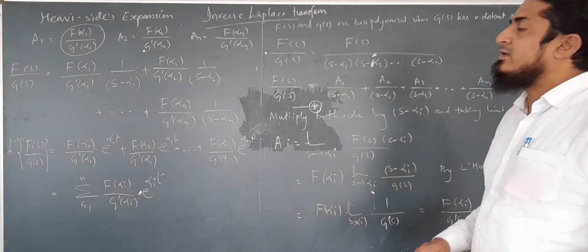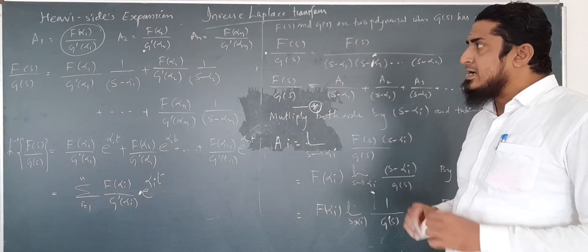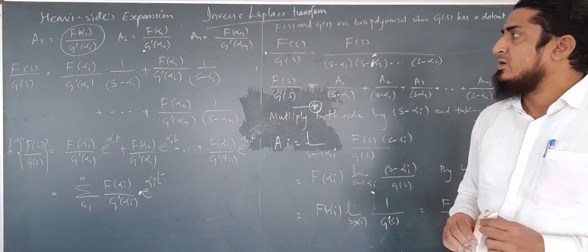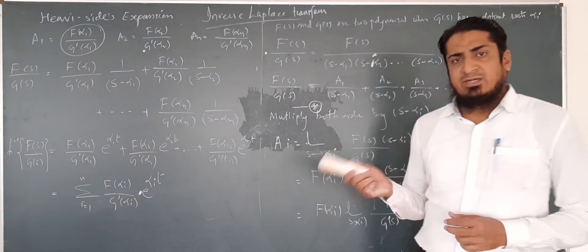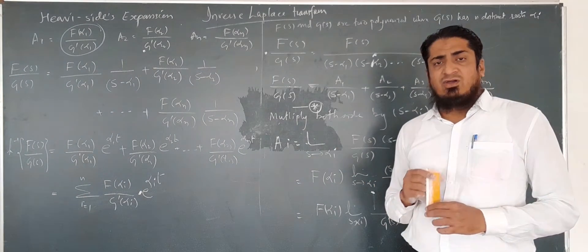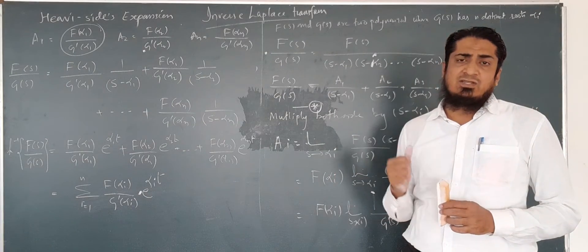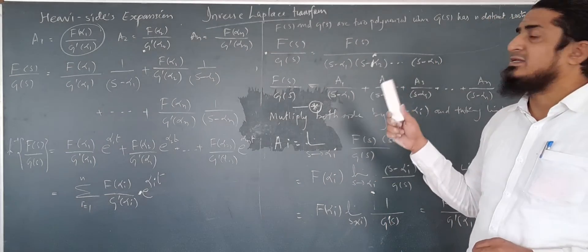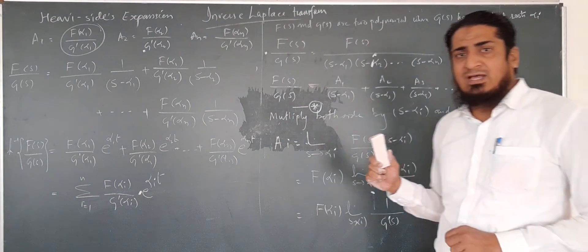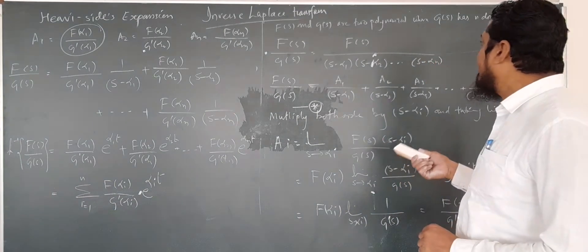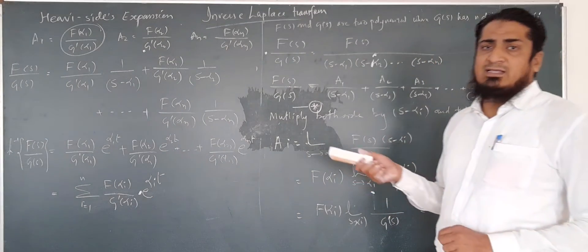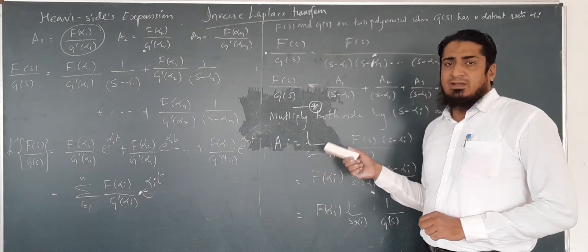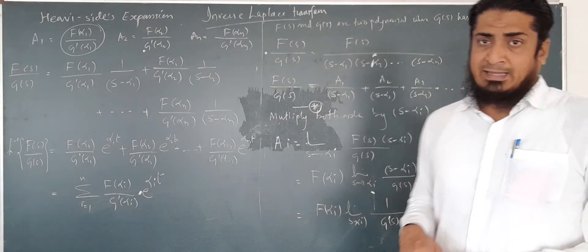Whenever we come across an example which has a polynomial in the numerator and denominator, and the degree of the numerator is less than the degree of the denominator, we can use the Heaviside Expansion Formula to solve that type of example. Today we will stop at this point, and we will have some examples from the next lecture. Till then, thank you, bye.